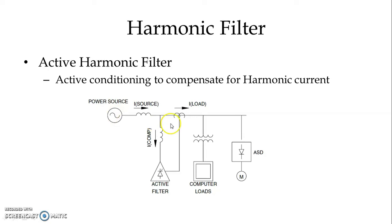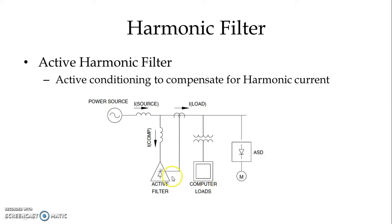In the active harmonic filter, we have a power source and a source current. We have different non-linear loads connected to the power system — including computer loads and adjustable speed drives. Different types of non-linear loads are connected on the same line. We also have a power electronic switching device connected, and that is our active harmonic filter.